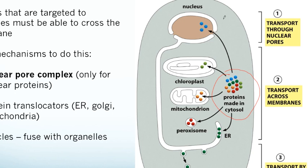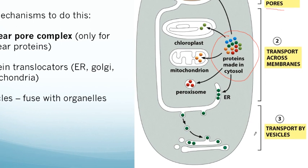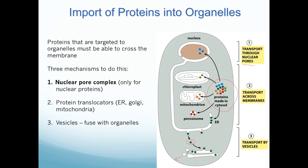There are three main ways. The first is to transport a protein into the nucleus through what are called nuclear pores. Another way is proteins need to be transported into organelles across different membranes, such as the mitochondria and the chloroplast — some proteins can be physically transported through these membranes. A third way is transport through vesicles, where a protein originally made in the ER can be transported via a vesicle to the Golgi apparatus, and ultimately to the plasma membrane.